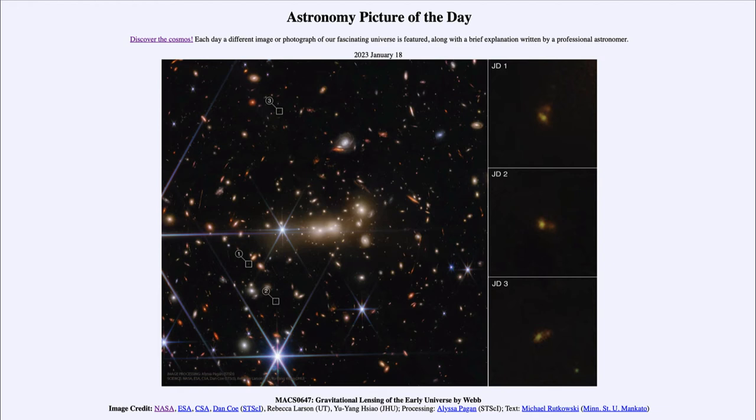Now these are actually images of the same galaxy. All three of these are identical galaxies that are gravitationally lensed by this foreground cluster.